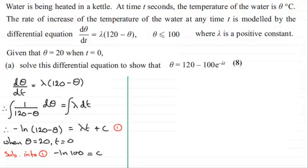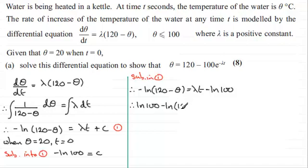So if we just come down here and sub this back in 1, alright, we'll just put sub in 1. Then what we've got is therefore minus the natural log of 120 minus θ is equal to λt and then the constant minus natural log of 100. Now we could clean this up by adding the natural log of 100 to both sides, bringing the logs to both sides. So we have natural log of 100 minus the natural log of 120 - θ would equal λt.